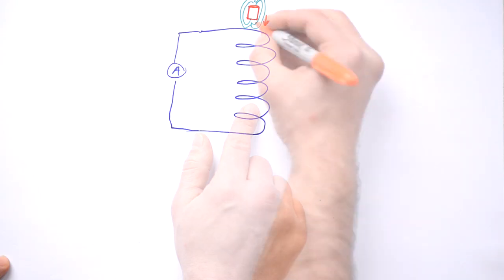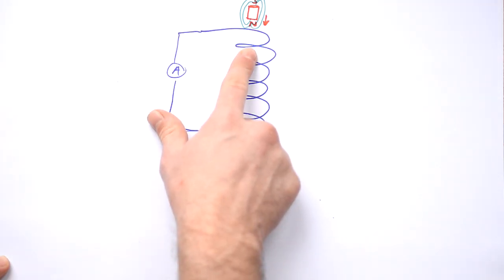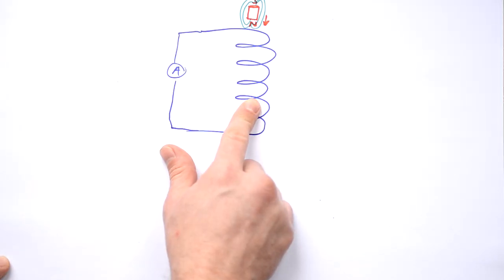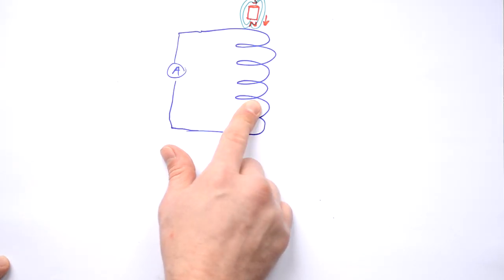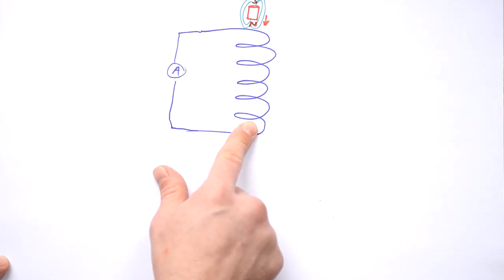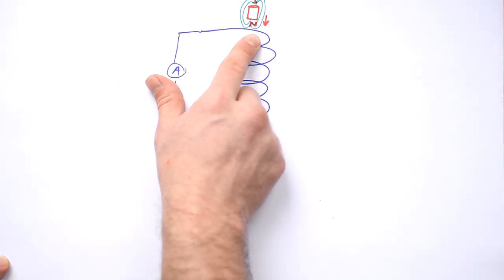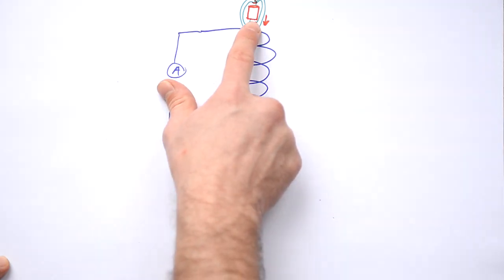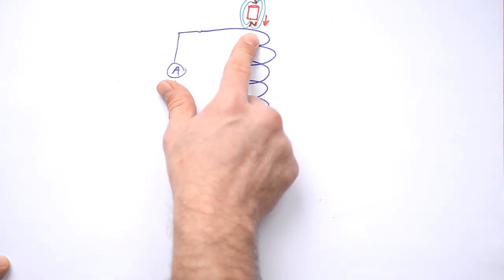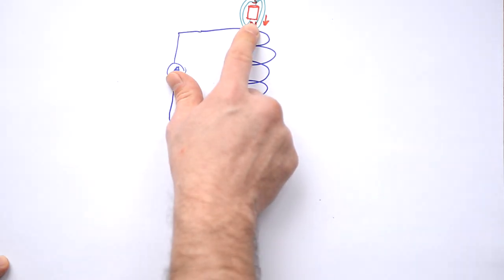The electrons are going to move. We're dropping the magnet in north end first. As the magnet falls through and cuts the wire, it induces a current in the solenoid, and that current produces its own magnetic field. The question is: which end of the solenoid is going to be the temporary north pole and which the south pole? If a south pole were induced at the top, north and south poles would attract each other, the magnet would speed up, and the induced field would get stronger, attracting it even more.